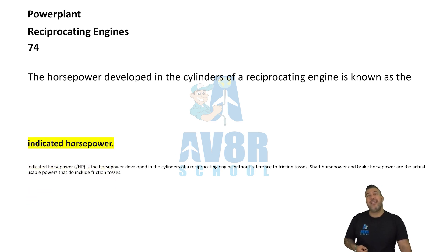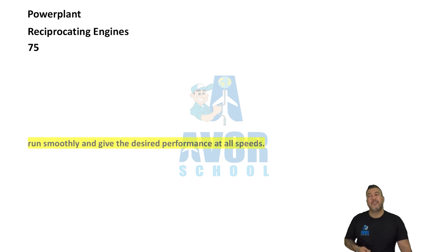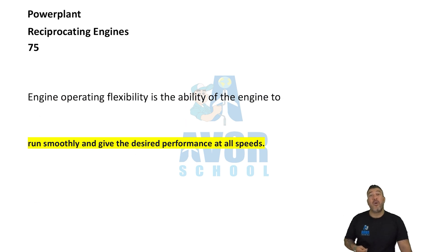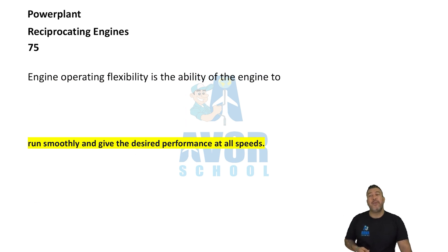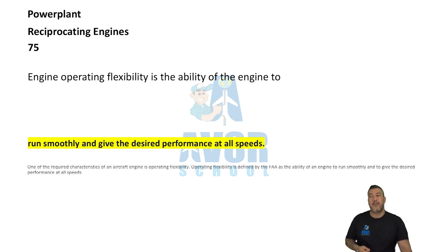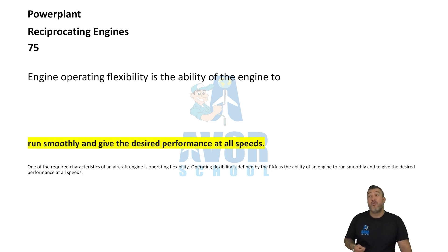Number 75: run smoothly and give the desired performance at all speeds. Engine operating flexibility is the ability of the engine to run smoothly and give the desired performance at all speeds.